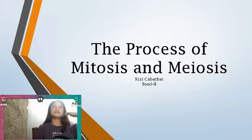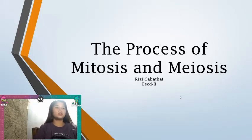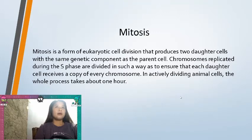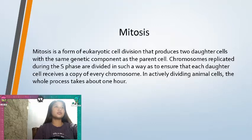This is Riziko Bat, discussing the process of mitosis and meiosis. Mitosis is a form of eukaryotic cell division that produces two daughter cells with the same genetic component as the parent cell.